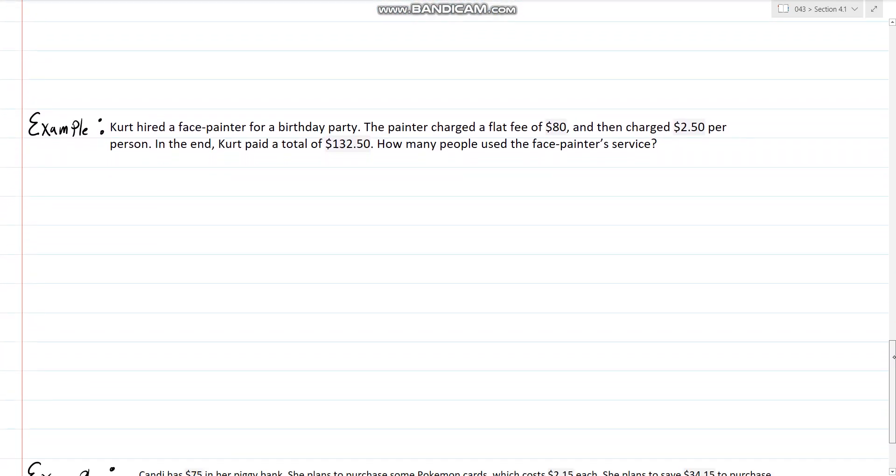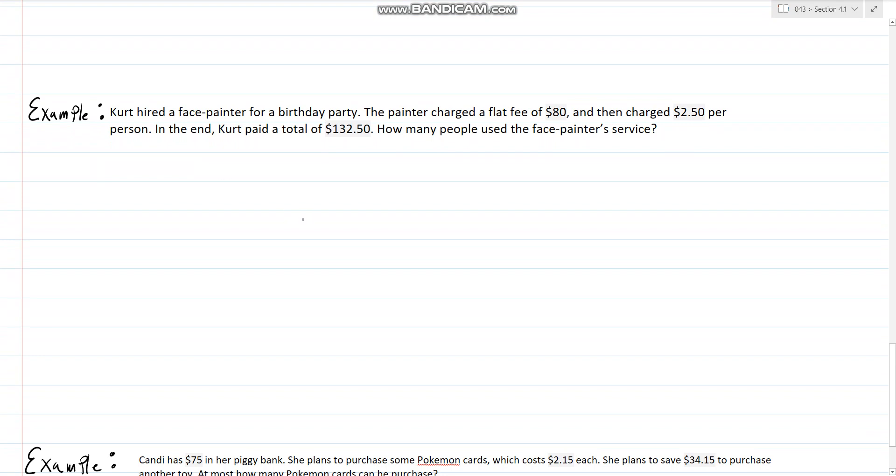Now I think we'll have time for this example as well. Kurt hired a face painter for a party and the painter charged a flat fee of $80 and then charged $2.50 per person. In the end, Kurt paid a total of $132.50. How many people used the service? For this one, the flat fee, the base fee, is $80 and the slope would be $2.50. So we could set up a line of y equals $2.50 times x plus $80.